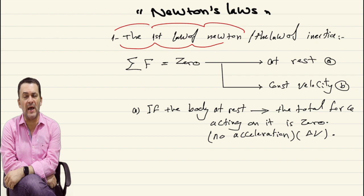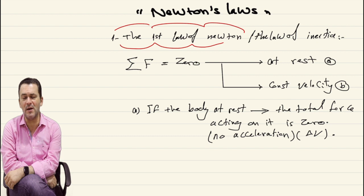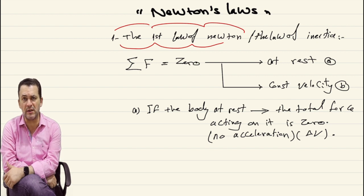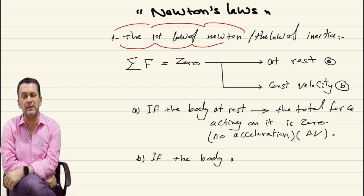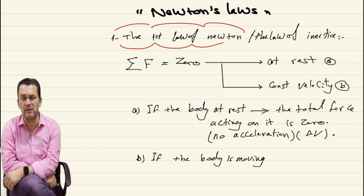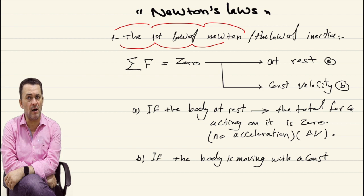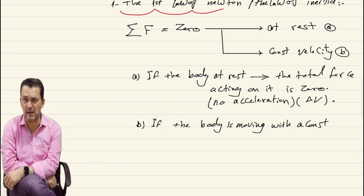Once when there is no force, it means there is no acceleration, and it means there is no change in velocity. The velocity continues at rest, or we could say the velocity is zero. For the second condition, the total force acting on any body could be zero if the body is moving at a constant velocity. That means there is no change in velocity, no acceleration, and the total force acting on the body is zero.